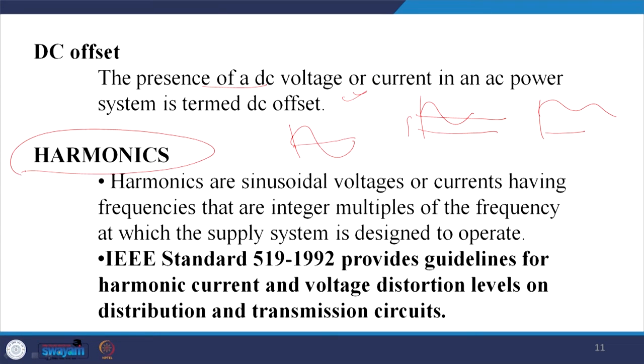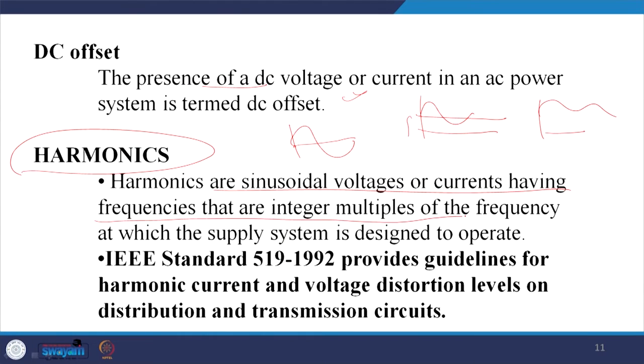Harmonics are the most dominant entity in power quality. Harmonics are sinusoidal voltages or currents having frequencies that are integral multiples of the frequency at which the supply system is designed to operate — IEEE standard 519, basically the 1992 standard, which has since been updated. It provides guidelines for harmonic current and voltage distortion levels on distribution and transmission circuits.